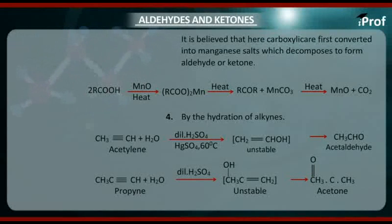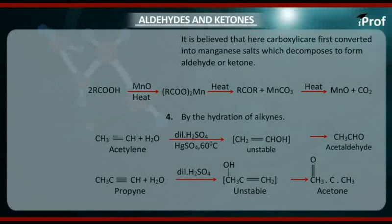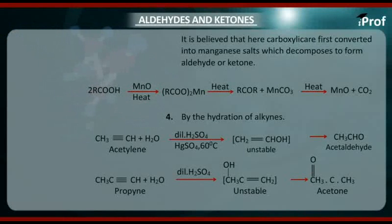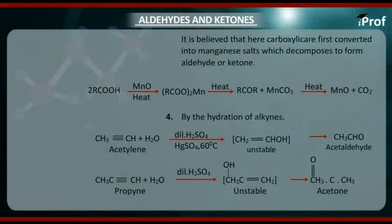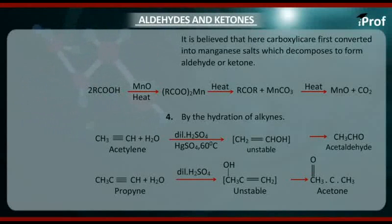The unstable vinyl alcohol CH2=CHOH further converts into CH3CHO (acetaldehyde). In the same manner, propyne (CH3C≡CH) when hydrated with water in presence of dilute sulphuric acid gives an unstable enol intermediate which further converts into acetone (CH3COCH3).